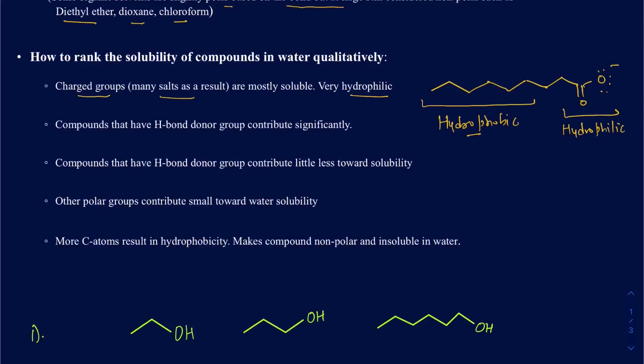The second thing to look for is hydrogen bond donors in the molecule. Hydrogen bond donors come from alcohols (R-OH groups), amines, or amides (R-NH2 groups). As long as you have a hydrogen attached to either oxygen, nitrogen, or fluorine, that hydrogen is considered a hydrogen bond donor. If you have a hydrogen bond donor, it contributes very significantly to solubility in water.